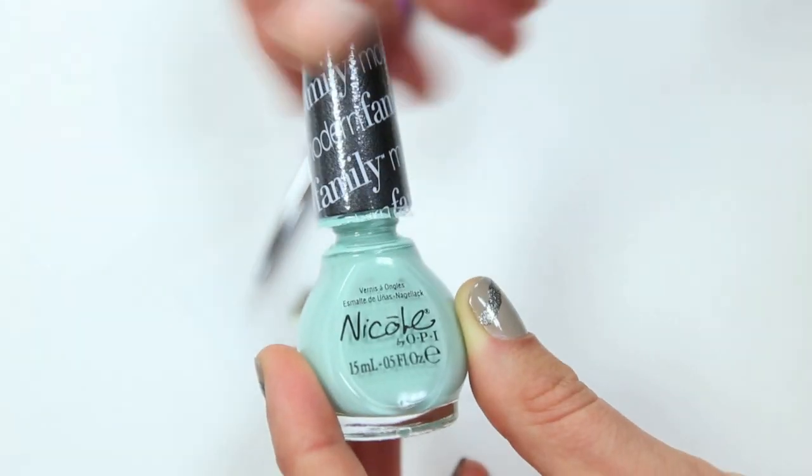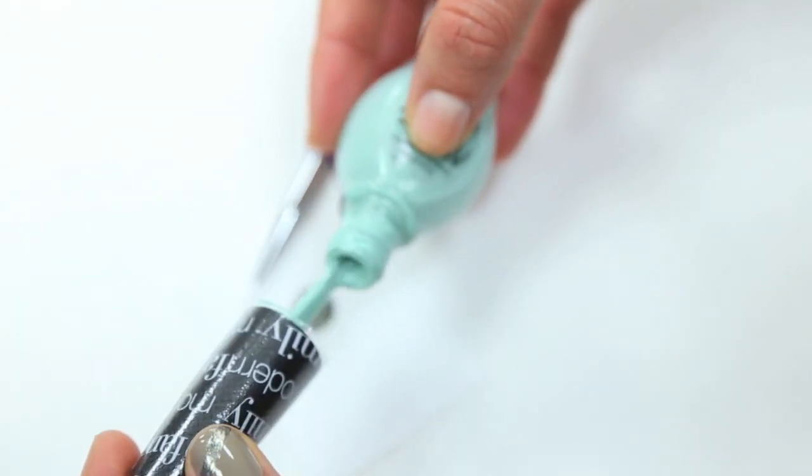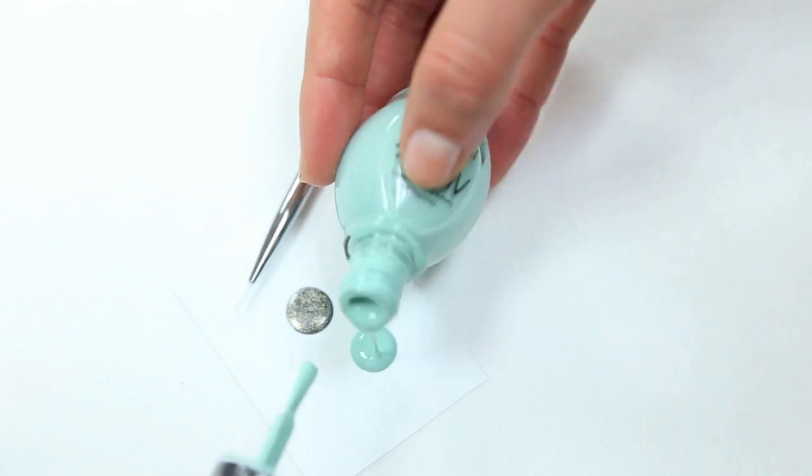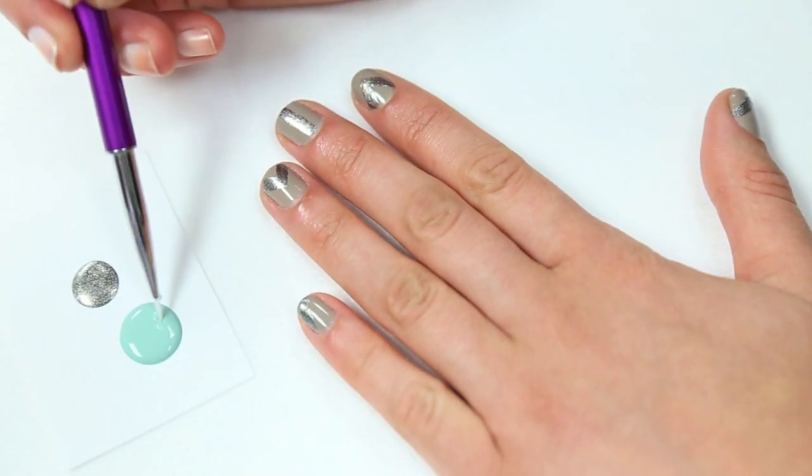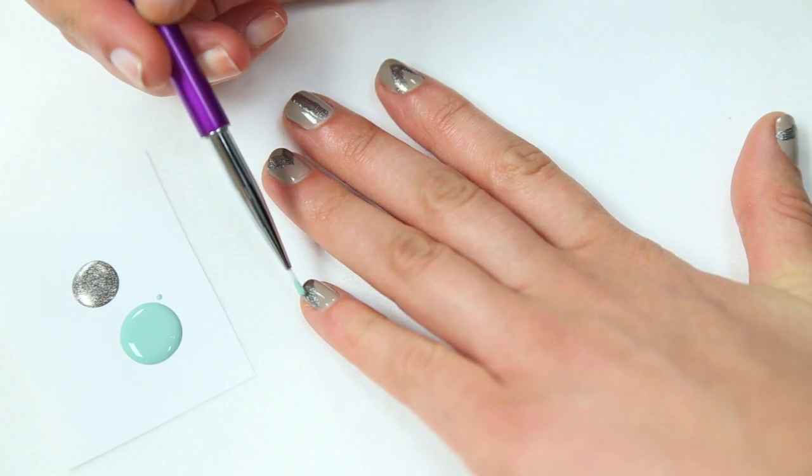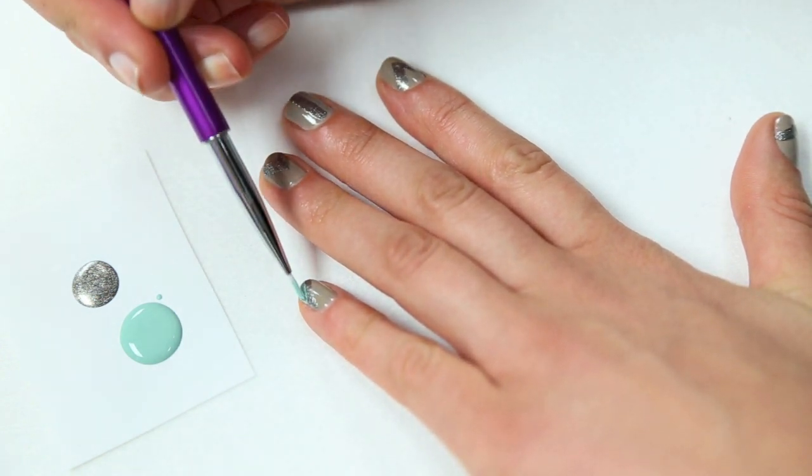Next, we'll use the minty green shade Alex By The Books. Pour out a little bit on a paper plate or piece of tin foil. Once you've cleaned your brush, dip it into Alex By The Books and start filling in the rest of your design.